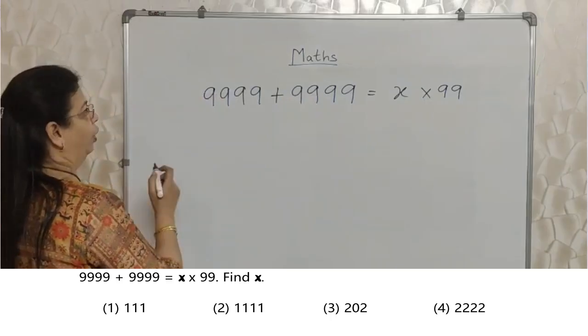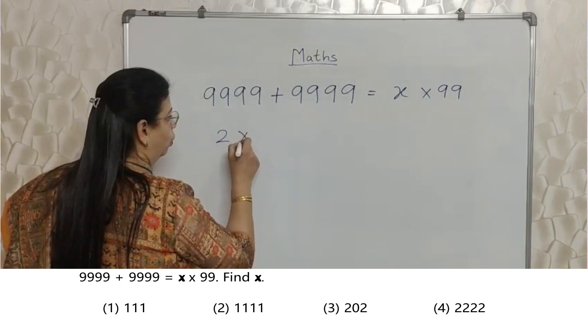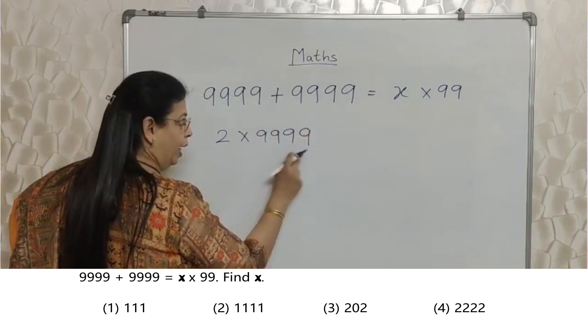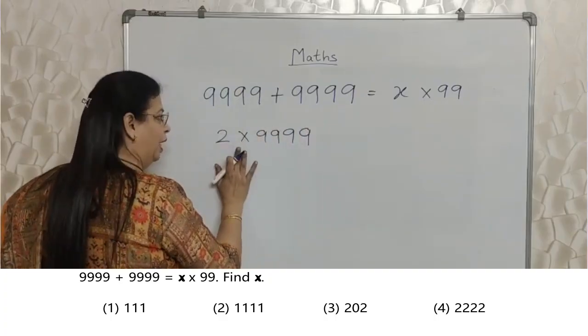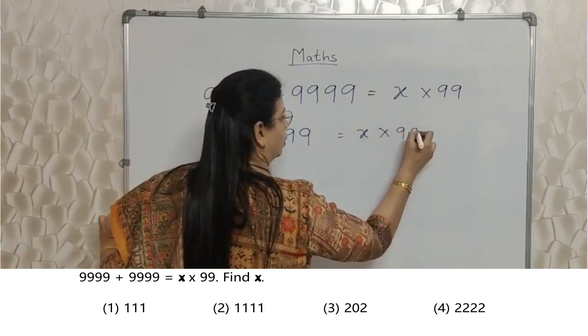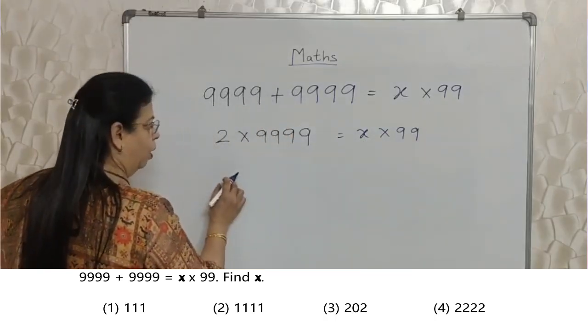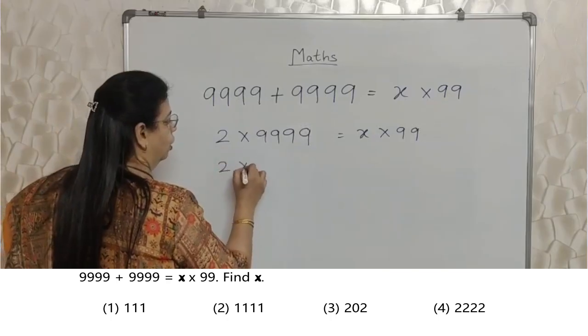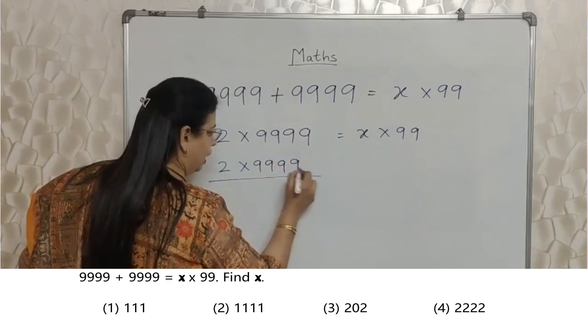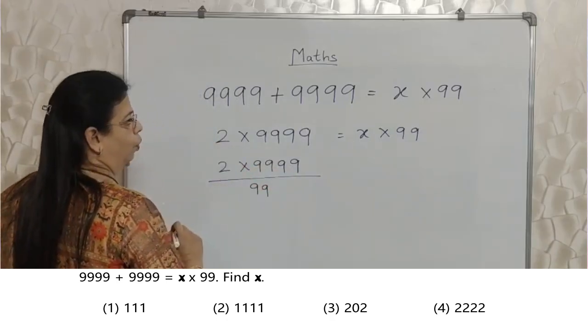9999 2 times hai. So 2 into 9999. We are not doing it, we are just keeping it like that. This is equal to x into 99. Now we need to find out the value of x. So we are keeping it alone here, and this 99 will come down. So this multiplication we are not doing, we are just writing in the form of multiplication divided by 99.